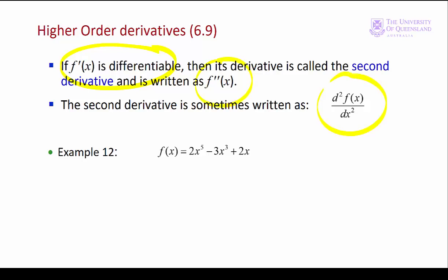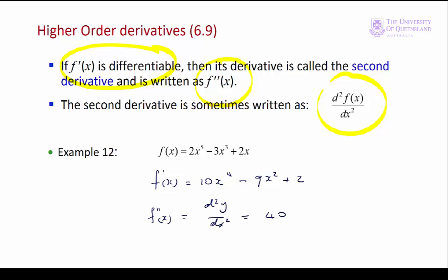Now let's look at an example of finding a second derivative of a function. We have f of x equal to 2x to the fifth minus 3x cubed plus 2x. So f prime of x equals 10x to the fourth minus 9x squared plus 2. We simply differentiate the first derivative, so f double prime of x, written as d squared y over dx squared, equals 40x cubed minus 18x.